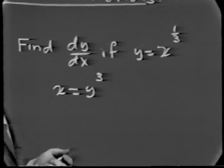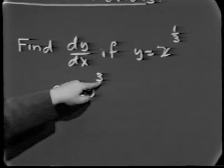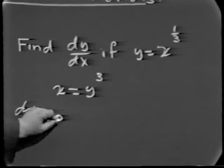Given that x equals y cubed — treating x as a function of y — we certainly know how to differentiate y cubed with respect to y. Namely, for a positive exponent, all we have to do is bring the exponent down and replace it by one less. Right away, we can say that dx/dy is 3y squared.